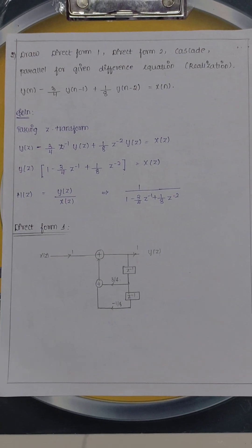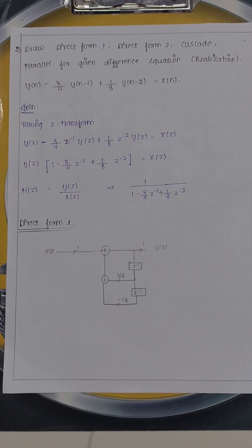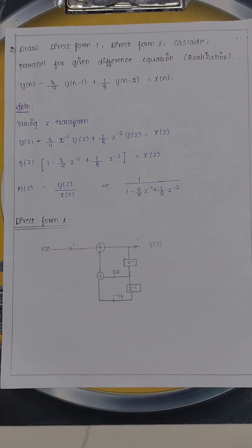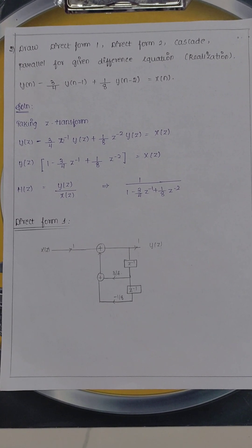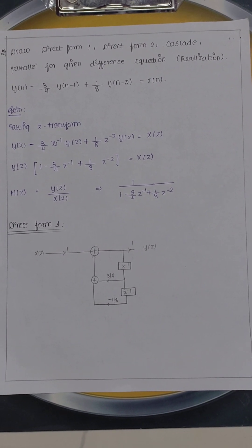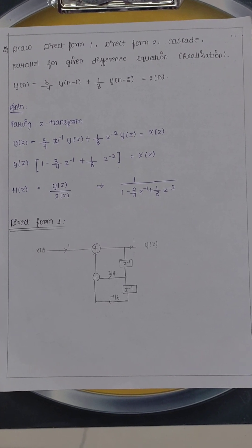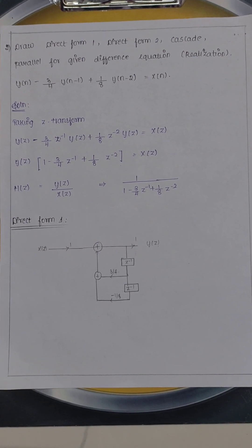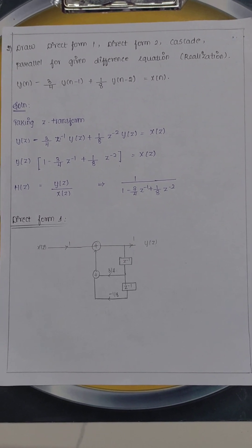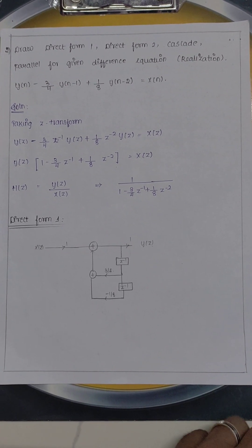Take Z transform: Y(z) minus 3 by 4 z inverse Y(z) plus 1 by 8 z power minus 2 Y(z) equals X(z). Y(z) take outside, therefore 1 minus 3 by 4 z inverse plus 1 by 8 z power minus 2 equals X(z). What is H(z) transfer function? Y(z) divided by X(z) which equals 1 divided by 1 minus 3 by 4 z inverse plus 1 by 8 z power minus 2.